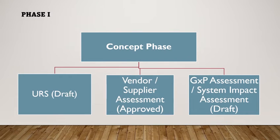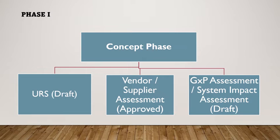Now we will discuss phase 1, that is the concept phase. Any project is initiated when there is a need from the business to have an automated solution for the organization's business requirements. In this phase, scope, cost and benefits of the project are discussed and decided whether to proceed to the next phase or not. It is clearly mentioned in the guideline that all these activities are out of scope of the GAMP 5 guideline.